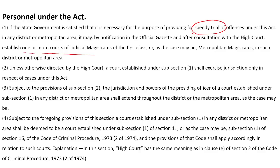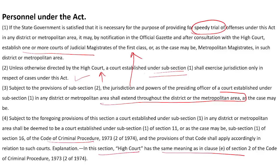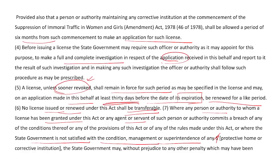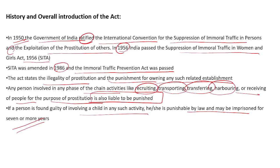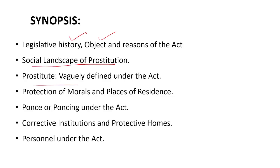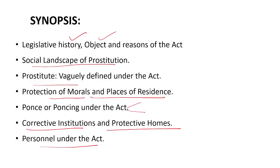For the purpose of speedy trial, the state government may, by notification in the official gazette, establish one or more judicial magistrate courts. Unless otherwise directed by the high court, a court established under subsection 1 shall exercise jurisdiction only in respect of cases under this Act. The jurisdiction of the presiding officer shall extend throughout the district or metropolitan area, the provisions of the CrPC will apply as they are, and in this section 'high court' has the same meaning as in Section 2(e) of the Criminal Procedure Code. This covers the history, title, purpose, social landscape, definitions, protection of morals, pouncing, corrective institutions, protective homes, and personnel under the Act.